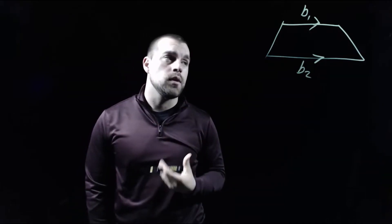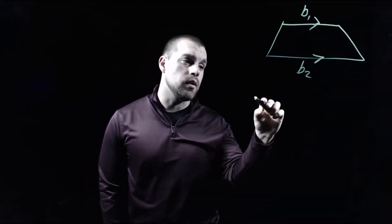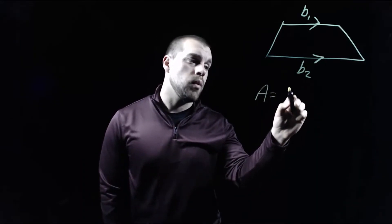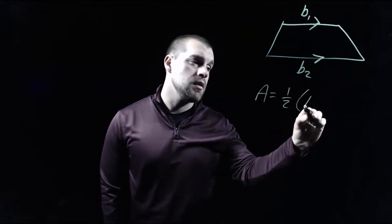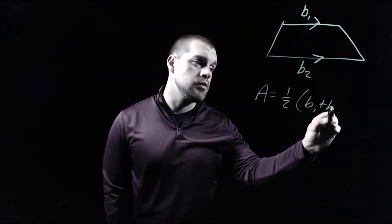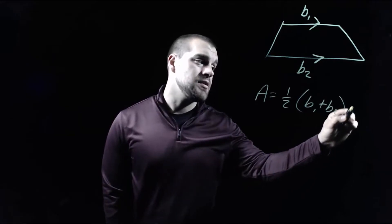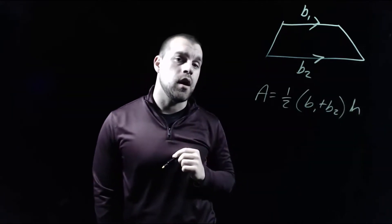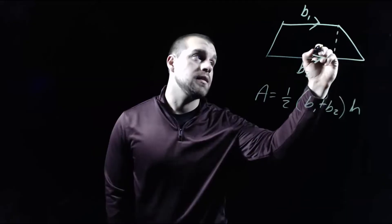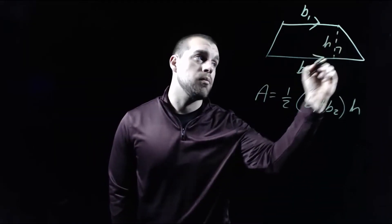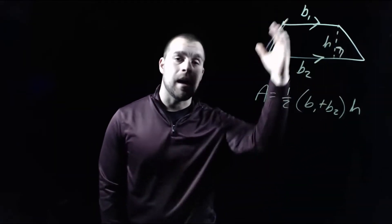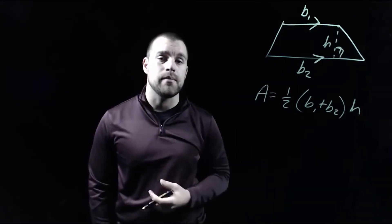So as far as our area formula goes, if we're looking at a trapezoid, what we want to do is we want to do one half times the sum of those two bases times the height of our trapezoid. In our trapezoid, the height is the vertical height that's perpendicular to the top base and the bottom base of our trapezoid.